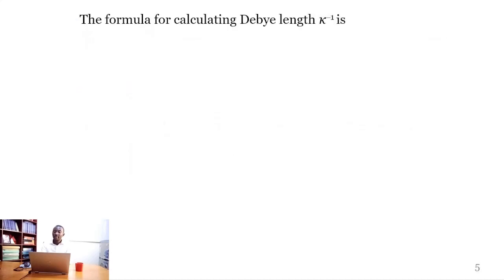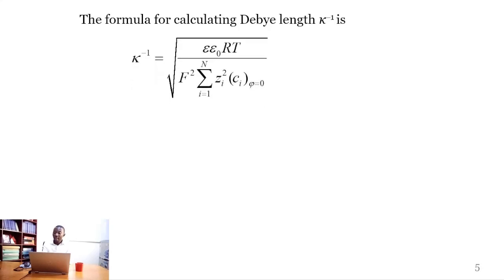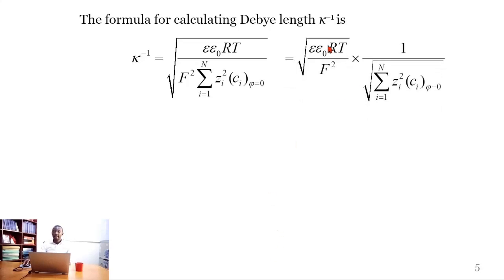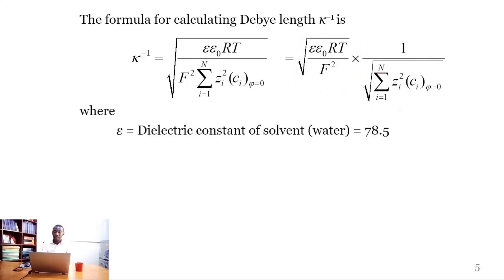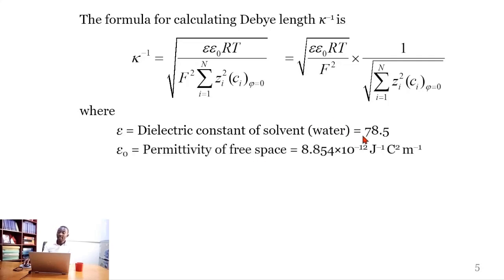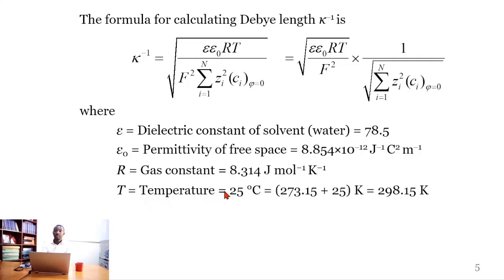The formula for calculating Debye Length, κ⁻¹, is as given. We can rewrite this formula by isolating separate parts so that we evaluate them separately and put them together. The symbols represent: ε, the dielectric constant of the solvent (water in this case) which has this value; ε₀, the permittivity of free space with this value; R, the gas constant with this value; and T, the temperature given in degrees centigrade, which we rewrite in Kelvin by adding 273.15, giving 298.15 K.